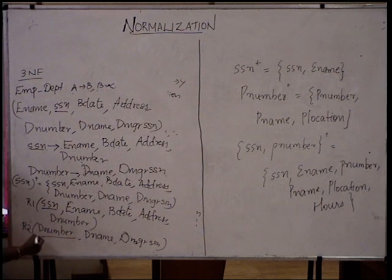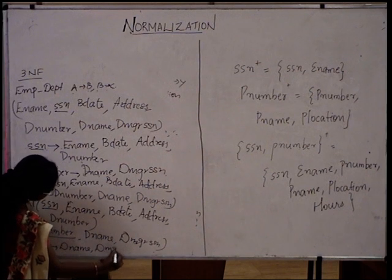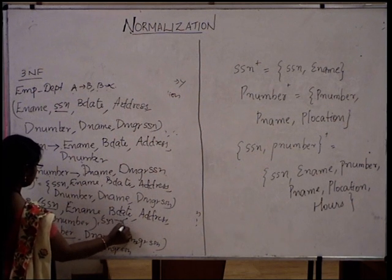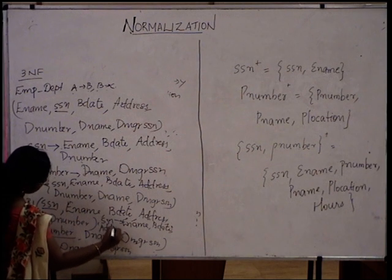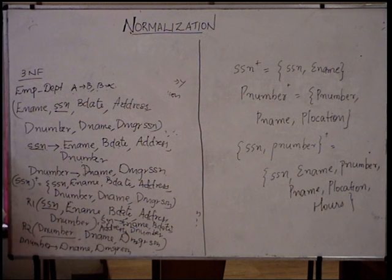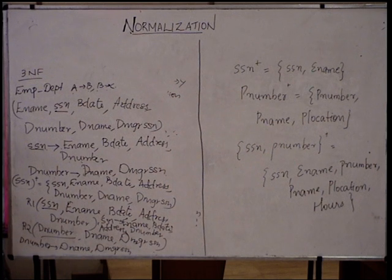Write the corresponding functional dependencies below the tables: d number implies d name and d manager SSN; and SSN implies ename, birth date, address, and d number. That's all with the normalization of the tables. The normal forms discussed are first normal form, second normal form, and third normal form. Thank you.